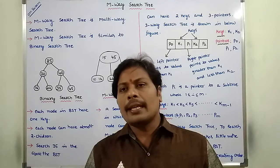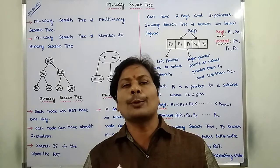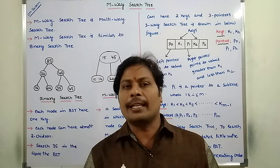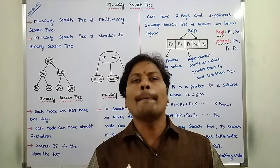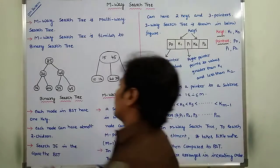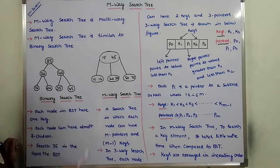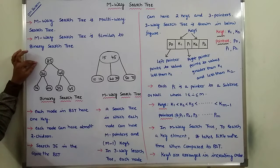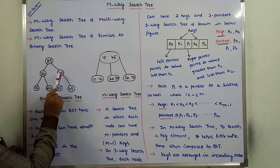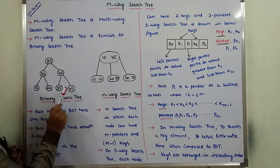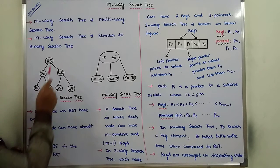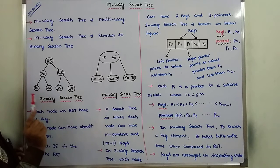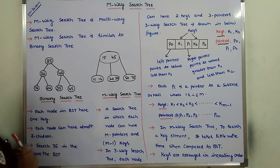Multi-Way Search Tree is approximately similar to Binary Search Tree. Now, what is the difference between M-Way Search Tree and Binary Search Tree? Consider the Binary Search Tree. Here, 25, 20, 40, 16, 22, 35, 45 are the keys. Keys are elements. In the Binary Search Tree, each node can have only one key element.